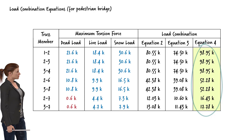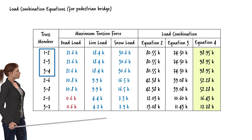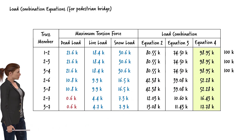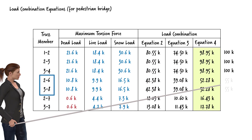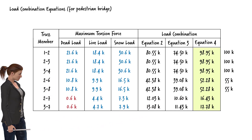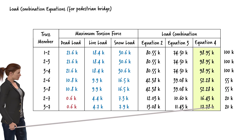Our tension members need to be designed for these factored forces. Let's design members 1-2, 2-3, and 3-4 for a tension force of 100 kips. Similarly, we can design members 2-6 and 3-8 for a tension force of 55 kips. And we design diagonal members 2-7 and 3-7 for a tension force of 20 kips.